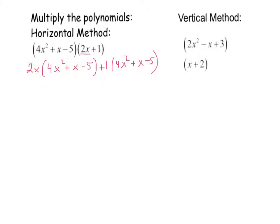Basically I am using the distributive property for the 2x and then for the 1, and then I'm going to combine like terms. So I have 8x to the 3rd plus 2x squared minus 10x plus 4x squared plus x minus 5.